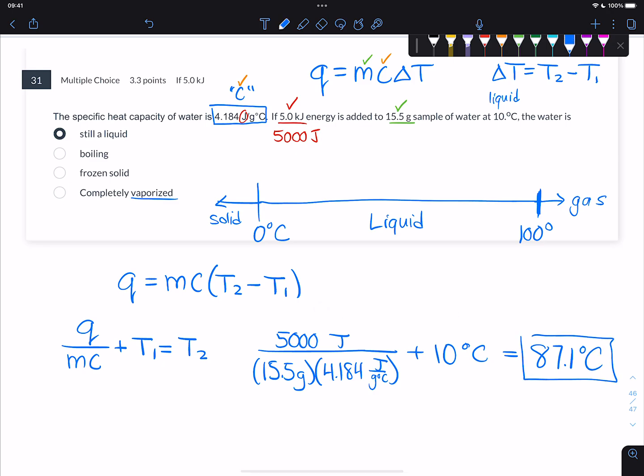I got 87.1 degrees Celsius. That's my final temperature. What that tells me is that this water certainly gained some heat and went from 10 degrees Celsius to 87.1 degrees Celsius, but it did not hit its boiling point. It went from around here to here or something like that. So it stayed a liquid. It just is a hotter liquid. So that's why the answer is still a liquid.